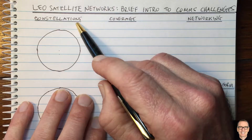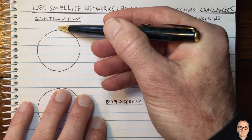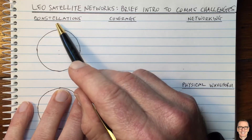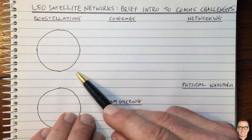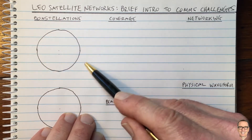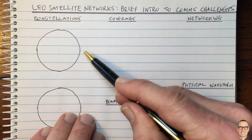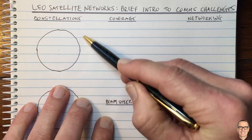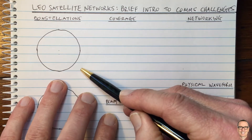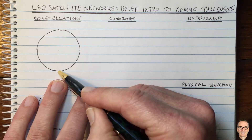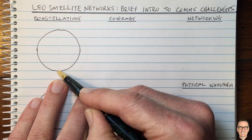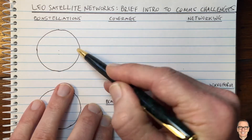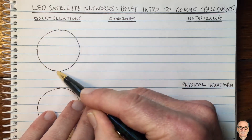For LEO satellites, one type of constellation you can have is a polar constellation. If this is the Earth here, you can imagine a satellite flying around it at a speed of roughly 90 minutes to travel all the way around. If we were to draw the line on the Earth that the satellite flies over, for the one in the plane of the page, that line would be the black line shown.